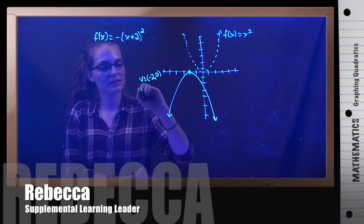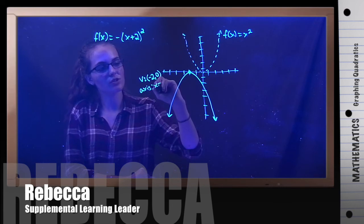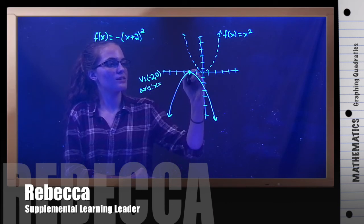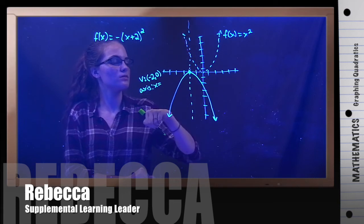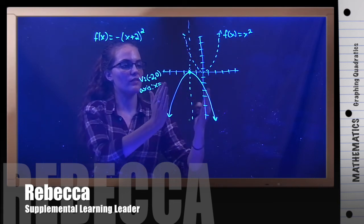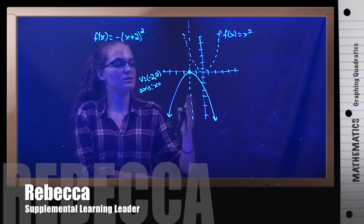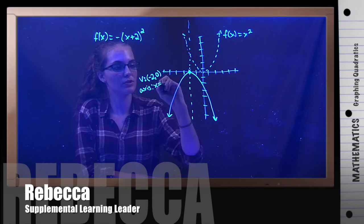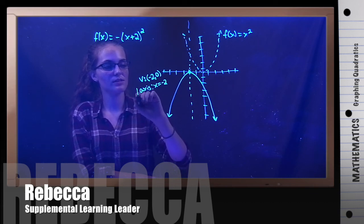Another thing would be the axis of symmetry. And that is always an equation that starts with x equals. Don't forget the x equals. And the axis of symmetry is just a line like that, where the graph is symmetrical on both sides. So it's not part of the graph, but it is the line where there is symmetry on both sides. So that line is x equals negative two, because that's where it hits the x-axis.